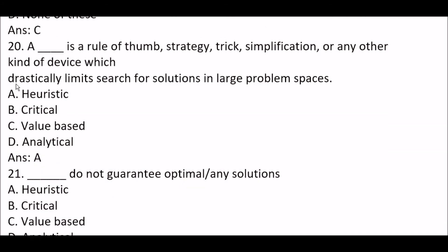Next question: a blank space is a rule of thumb, strategy, trick, simplification, or any other kind of device which drastically limits search for solutions in large problem spaces. Option A: heuristic. Option B: critical. Option C: value-based. Option D: analytical. The right answer is Option A — a heuristic is a rule of thumb, strategy, trick, or simplification that limits search in large problem spaces.